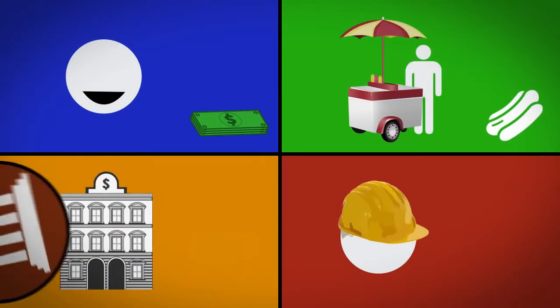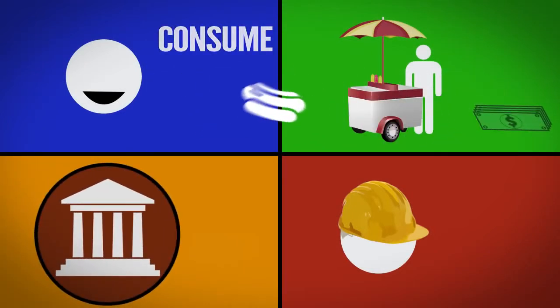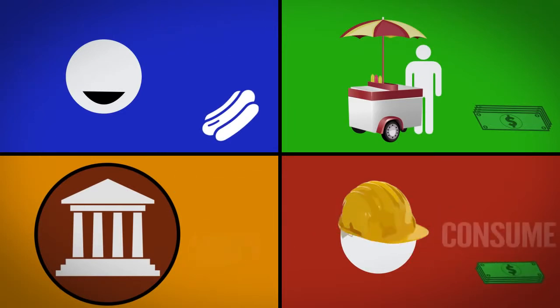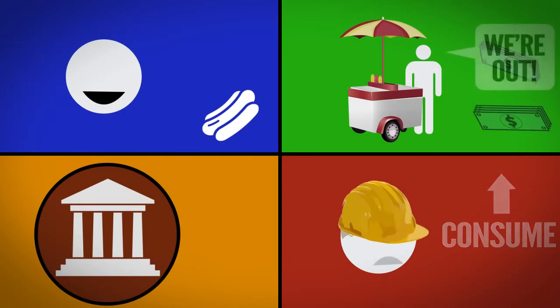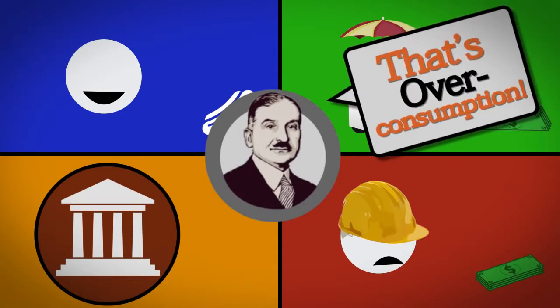Here's why. Instead of what happens in a free market where one person's savings is another's consumption, loans not backed by savings result in both parties trying to consume at the same time. Legendary economist Ludwig von Mises called this overconsumption. And it leads to all kinds of problems.